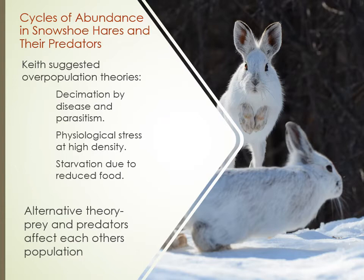An alternative theory was put forth saying that the cycles were instead driven by the predators — that if you get more hares, you get more predators eating them, which would eventually reduce the prey population. None of these hypotheses clearly accounted for all the population cycles observed. The 10-year cycle was not likely to become better understood by further theorizing, and Keith organized long-term studies that went on for 30 years in North America and Europe, giving us a really good idea of the complexity of the factors affecting these populations.